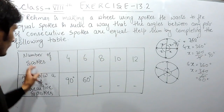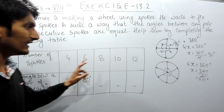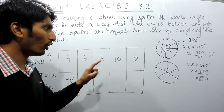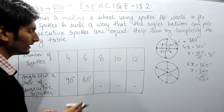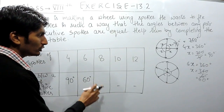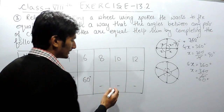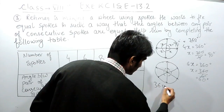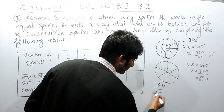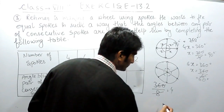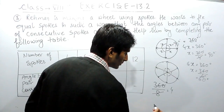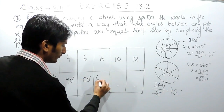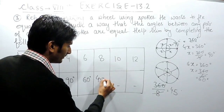Now the number of spokes is 8, so clearly the number of angles will be 8 and the sum of all angles is 360. To find one angle you have to divide 360 by 8. Dividing 360 by 8 gives 45 degrees.